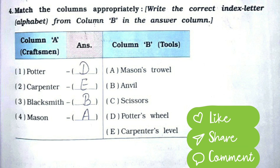Question four: Match the following. First, potter — option D, potter's wheel. Second, carpenter — option E, carpenter's level. Third, blacksmith — option B, anvil. Fourth, mason — option A, mason's trowel.